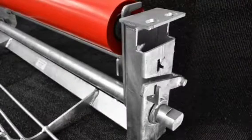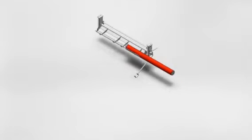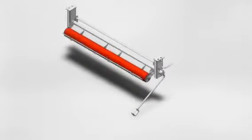Kinder's Ergo Swift idlers are return idlers that allow for quick roller changeouts while only requiring access to one side of the conveyor.